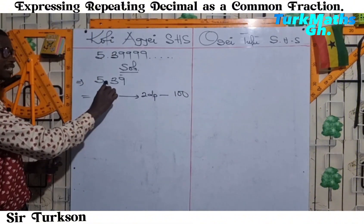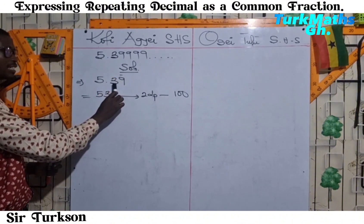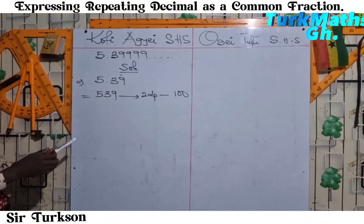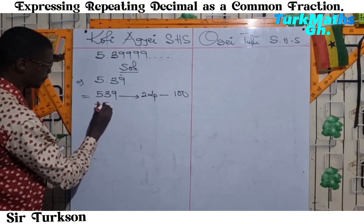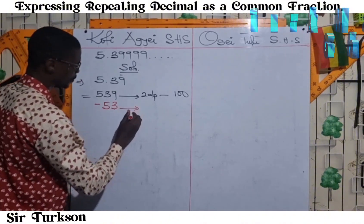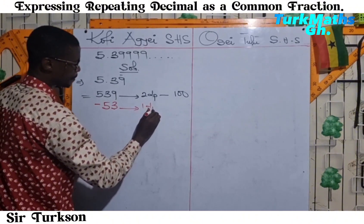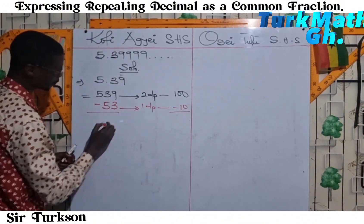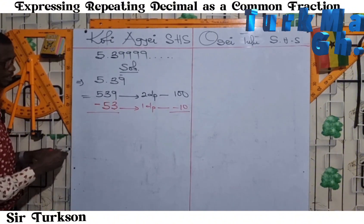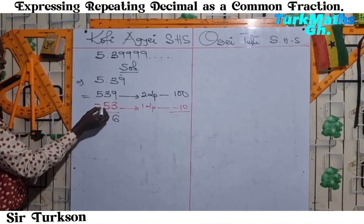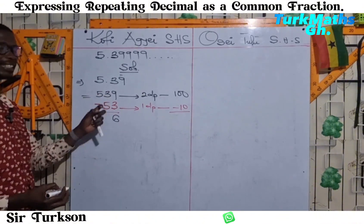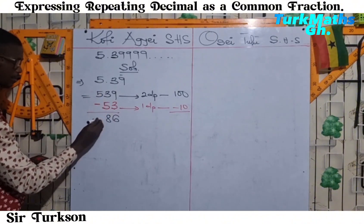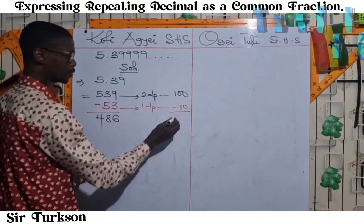With 2 decimal places, that gives us 100. The next step is to take the point to the next position between 3 and 9, which gives us 53. So I'm now going to subtract 53 from 539. We have one decimal place here, which gives us 10. So we subtract: 9 minus 3 gives us 6. Then 3 minus 5 is not possible, so I borrow one, giving 13. 13 minus 5 gives us 8. We are level 4, so you drop the 4 here.